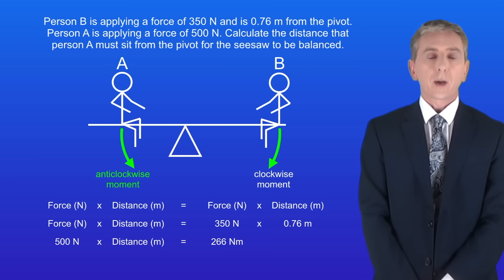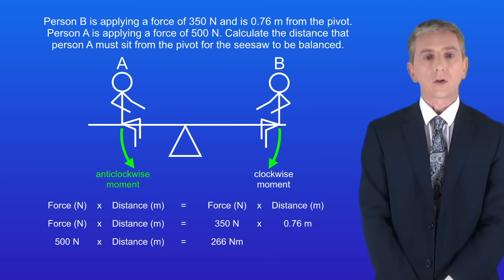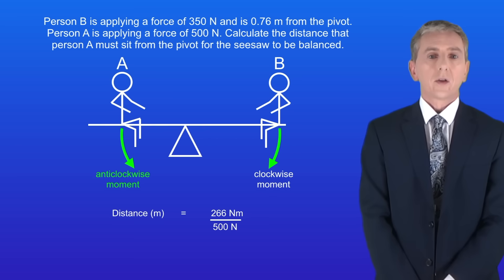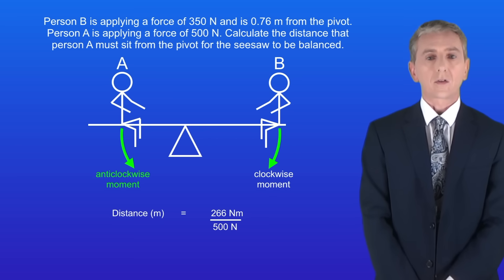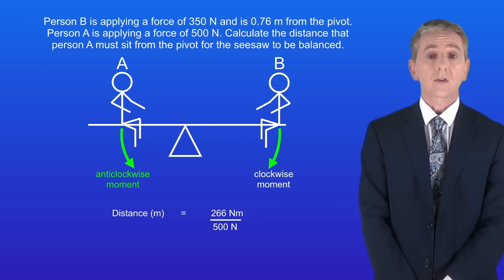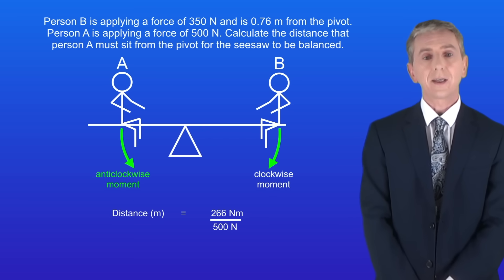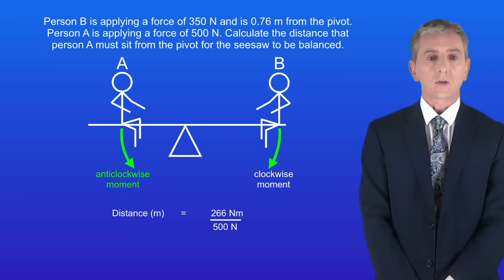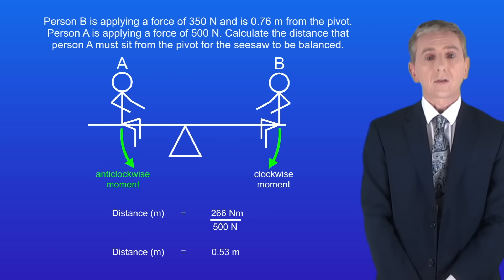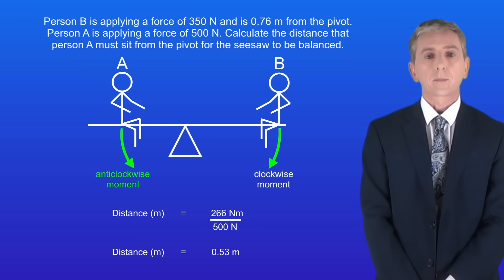We know the force applied by person A is 500 newtons. So to calculate person A's distance, we divide 266 newton meters by 500 newtons, giving us a distance of 0.53 meters.